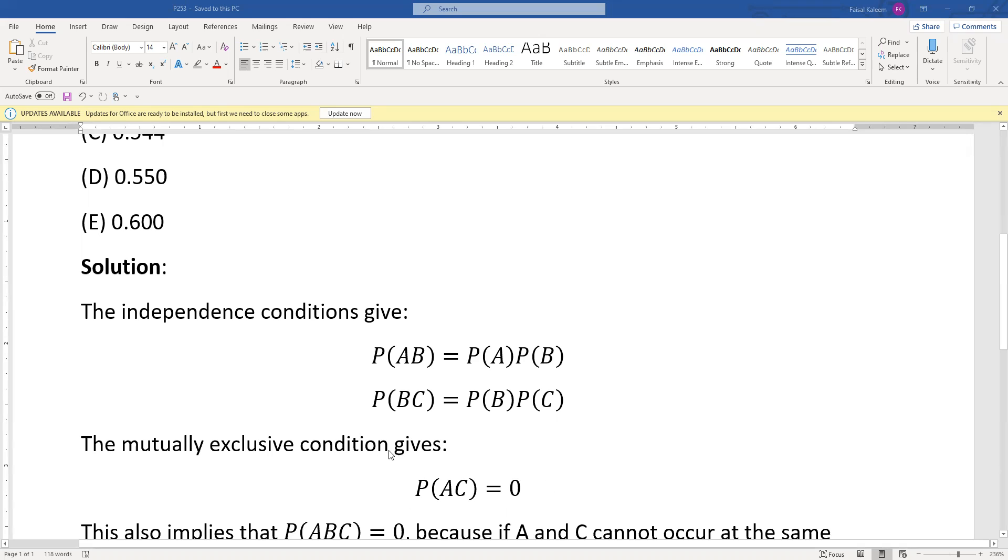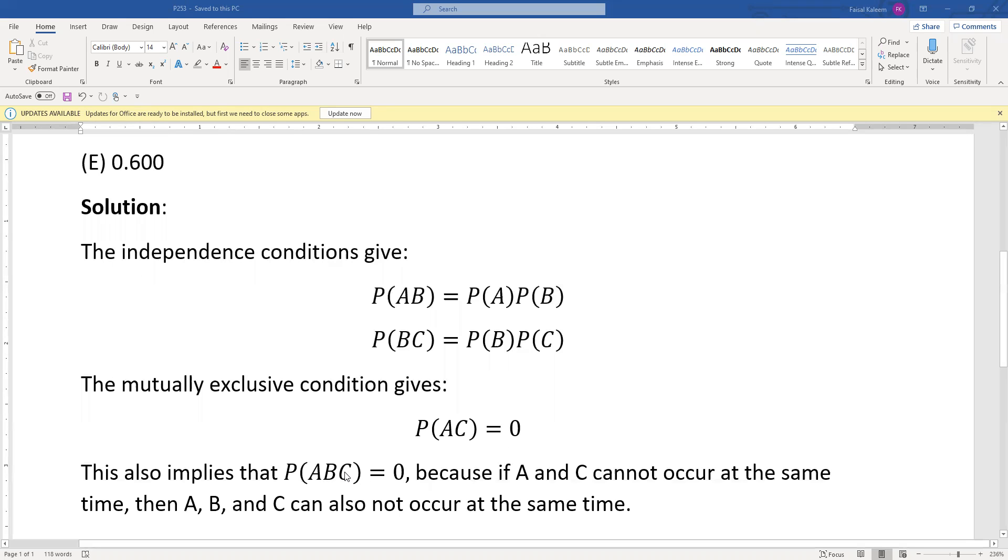A and C are mutually exclusive, meaning they cannot occur at the same time. So probability of AC equals zero. This also implies that P(ABC) equals zero, because if A and C cannot occur at the same time, then A, B, and C also cannot occur at the same time.